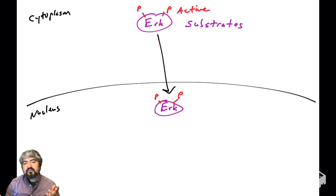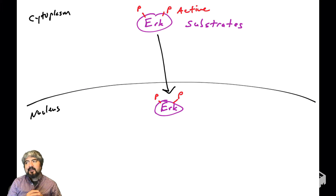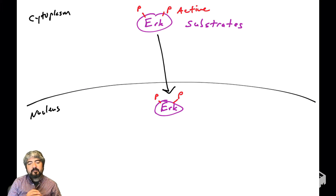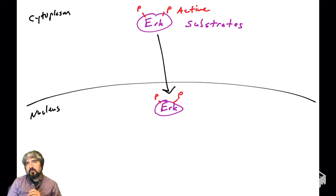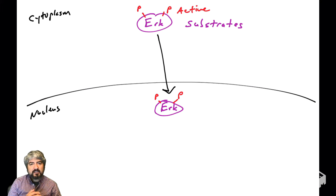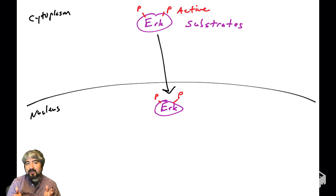We're not going to learn all 100 substrates, but we're going to learn a number of them in this video. You're going to see a pattern of these substrates being phosphorylated and activated and turning on genes. What kind of proteins turn on genes? Transcription factors turn on genes, so a lot of the proteins we're going to talk about are transcription factors.